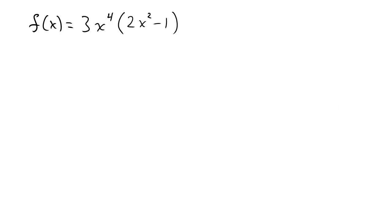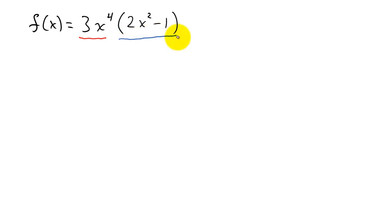Here we have f of x equals 3x to the fourth times 2x squared minus 1. Our first function is 3x to the fourth, and our second function is 2x squared minus 1.